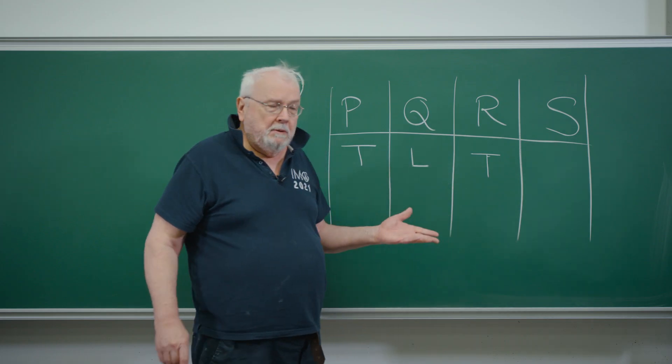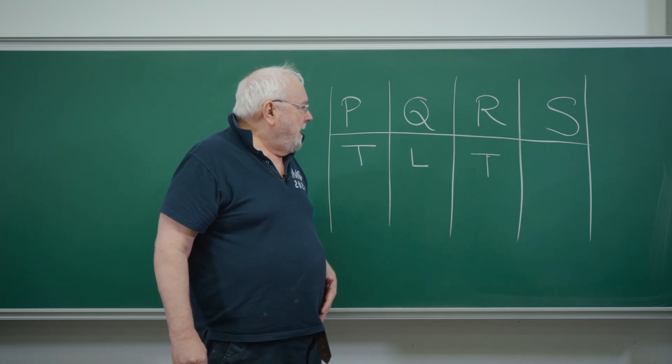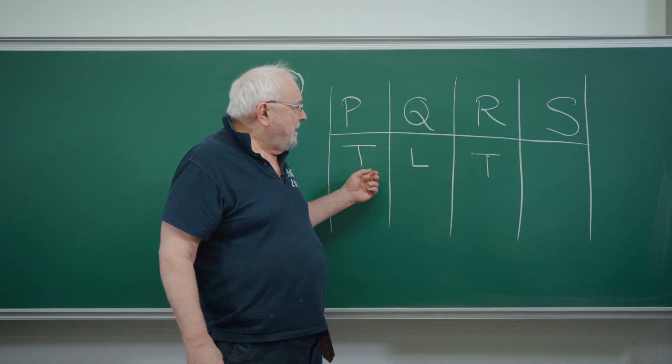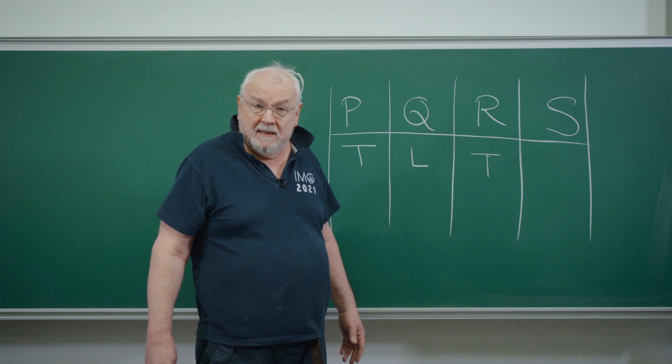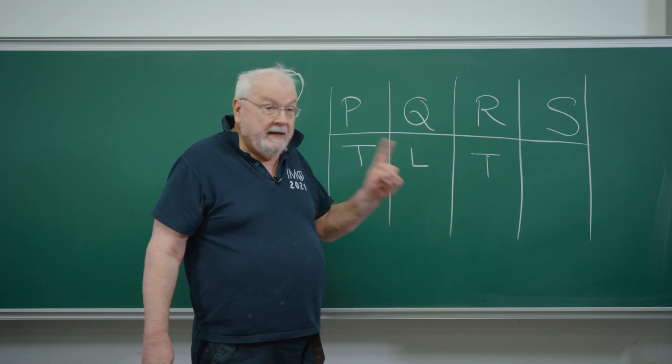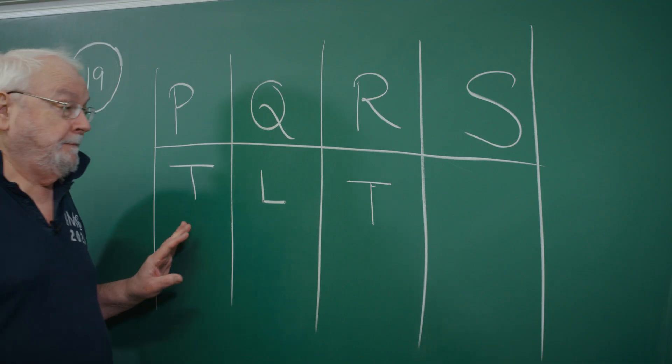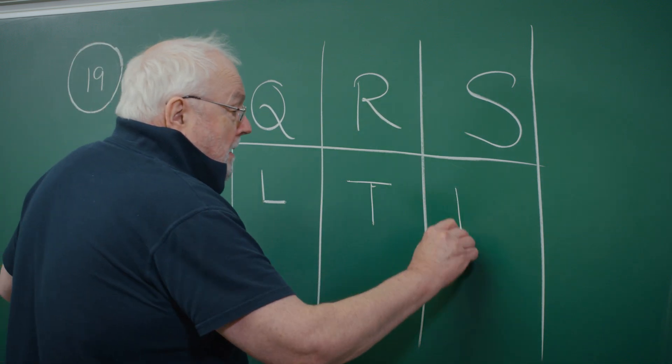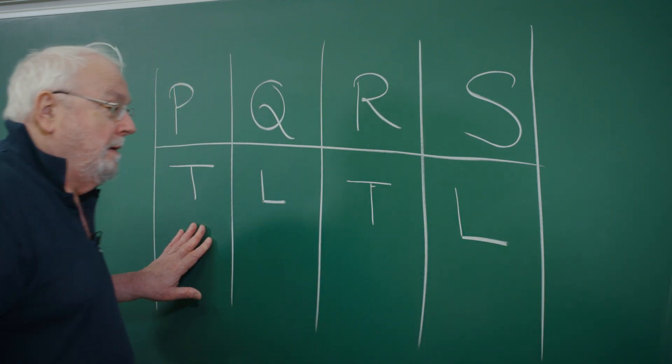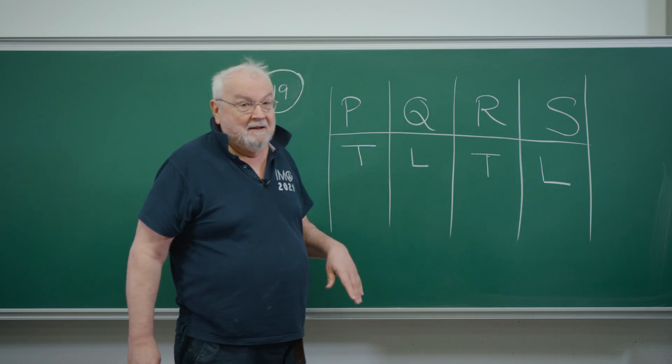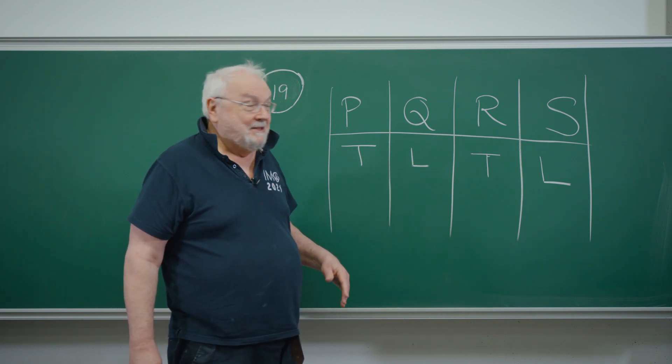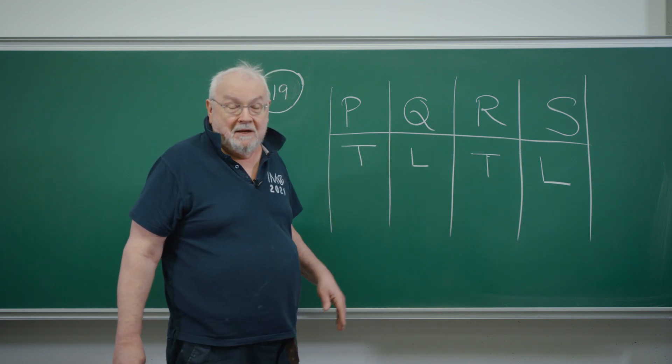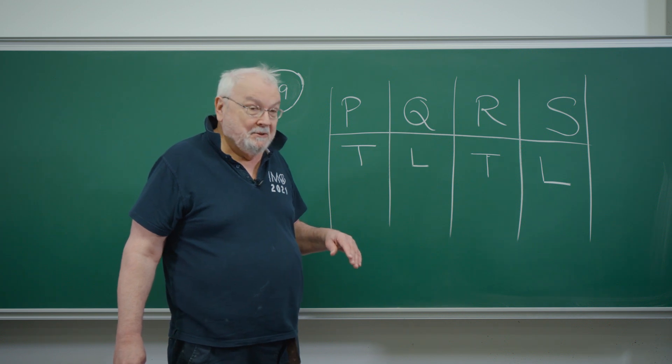S looks at these people and S makes the remark that exactly two of these people are liars. Now that's not the case. So S must be a liar. And that answers the question, actually, because the answer is that exactly two of these characters are truth-tellers and exactly two are liars.